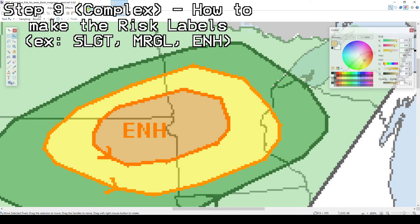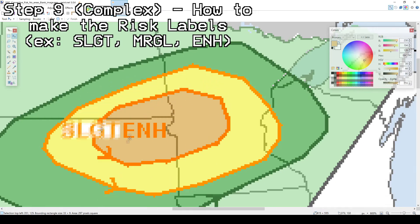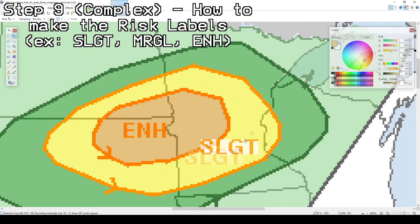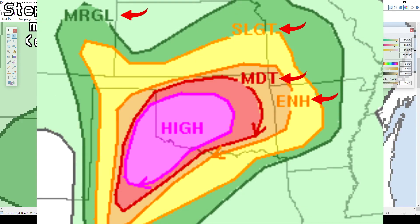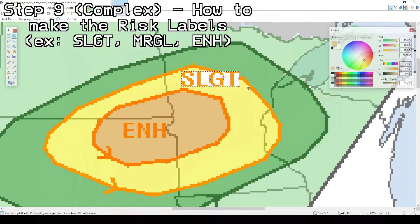Now here is the hard part — you'll likely run into this issue with some of the outlooks you make. When you go to paste the label, there isn't any open room in the risk area where it doesn't overlap state border lines and or any other risk area outlines. This is one of the reasons why sometimes real SPC convective outlooks have their labels overlapping state border lines and or other risk area outlines. If a label overlaps another outline for risk, then some of the outline is removed so that the label is completely visible and does not blend in with the outlines, as it is the same color.